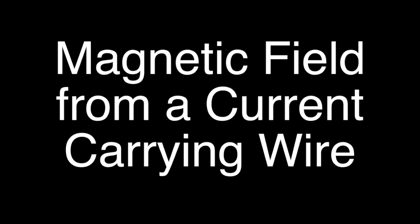In today's video we're going to be talking about the magnetic field from a current carrying wire. A magnetic field is a vector quantity, so we have to describe it by both a magnitude and a direction. In the first part of this video we're going to talk about how we determine the direction of the magnetic field from a current carrying wire.